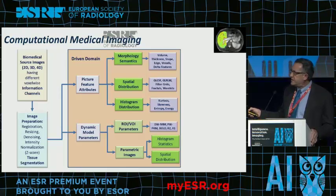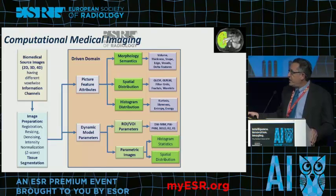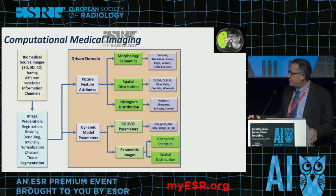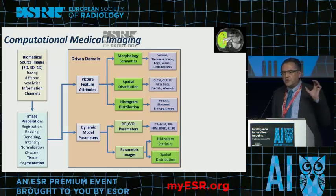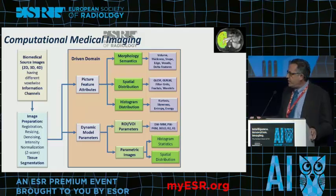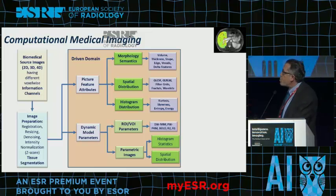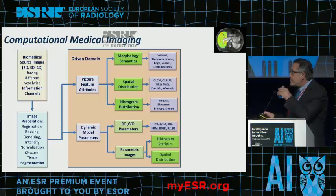In real-day practice we have many different images from many modalities and sequences with many information channels. These require image preparation including registration, denoising, resizing, and intensity normalization. Of course we need tissue segmentation — extracting the organ or tumor we want to evaluate in as automatic a way as possible. Once we have the region of interest we can proceed to feature attributes, which is mainly radiomics: morphology or semantics, the spatial distribution of signal intensity, and histogram distribution.